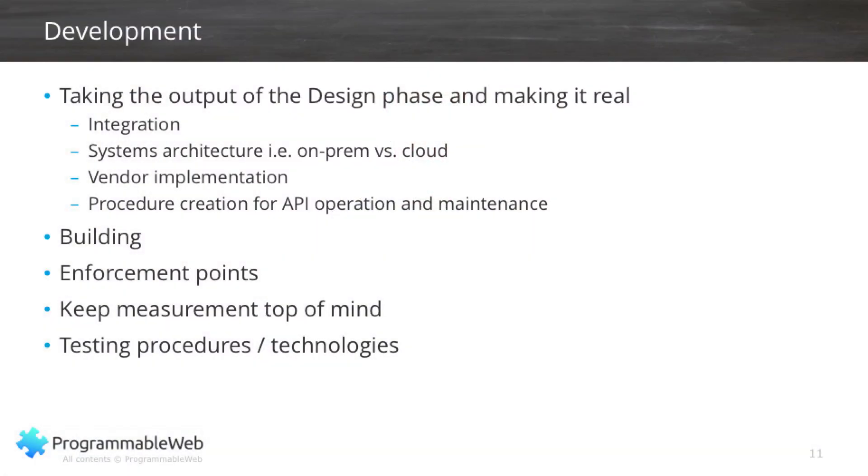I talked earlier about testing procedures and technologies. For example, SmartBear makes some technologies for doing ongoing testing of your APIs to make sure they are performing well, that they are secure, and that nothing has been introduced to compromise the security. It's very important that you're always testing your APIs, whether you're in the design phase or in ongoing operation, to make sure that nothing has gone wrong.